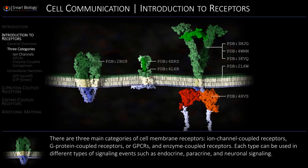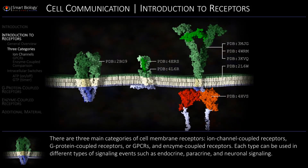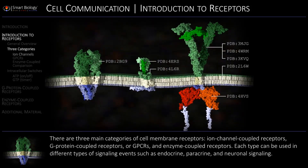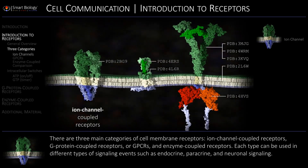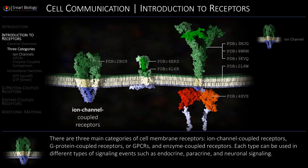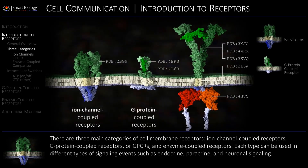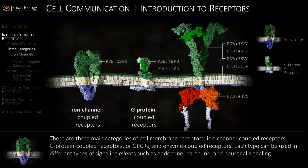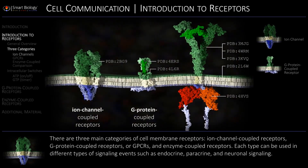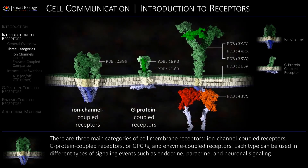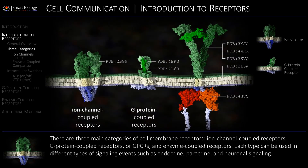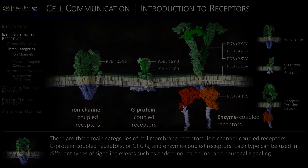There are three main categories of cell membrane receptors: ion-channel coupled receptors, G-protein-coupled receptors, or GPCRs, and enzyme-coupled receptors.